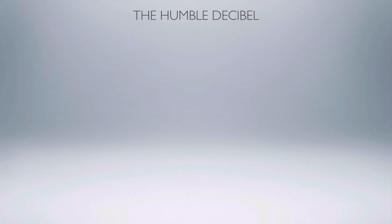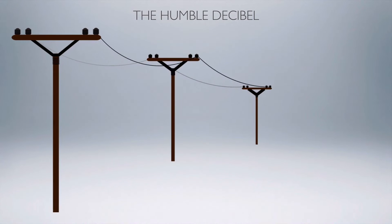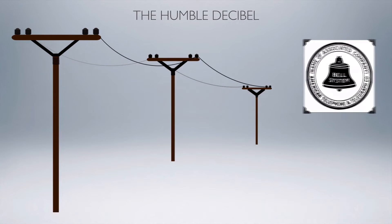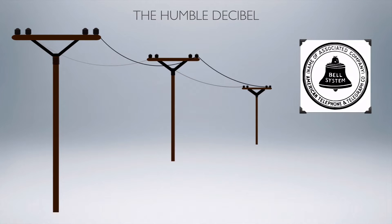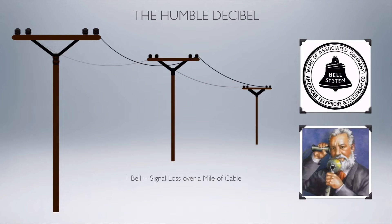Let's first look at the humble decibel, which, like a lot of the origins of audio, goes back to either the telephone days or the radio days. In this case, it goes back to the Bell Telephone Company, which measured the signal loss over one mile of cable and called that one bell, named after Alexander Graham Bell. In audio, a bell is too coarse a measurement, so we split it into tenths — 10 decibels equals one bell.